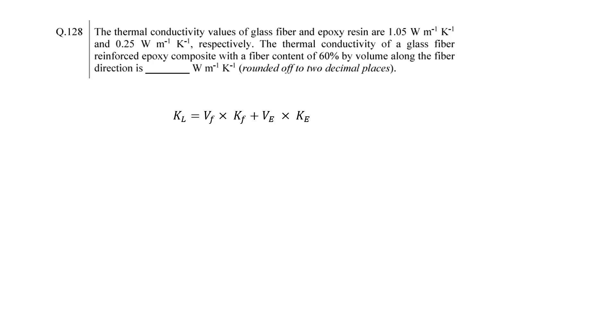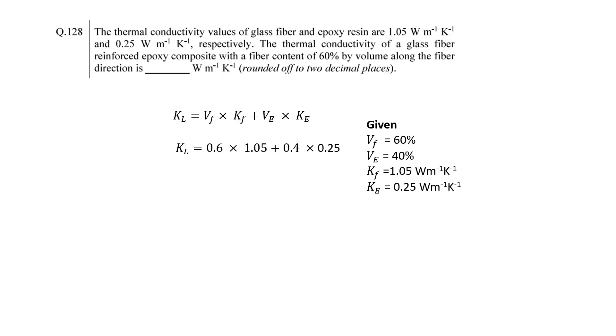In Question 128, we need to calculate the thermal conductivity of a glass fiber composite. This can be simply calculated using the rule of mixture equation. As the volume fraction and conductivity of individual components are given, we can simply put these values into the equation and calculate the thermal conductivity of the composite, which is 0.73.